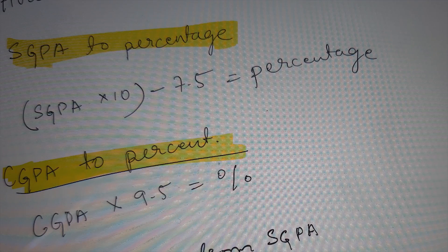To convert SGPA to percentage: SGPA × 10 − 7.5 = percentage. To convert CGPA to percentage: CGPA × 9.5 = percentage. So if you apply to a company and they ask for a percentage from your CGPA, it will be easy to calculate.